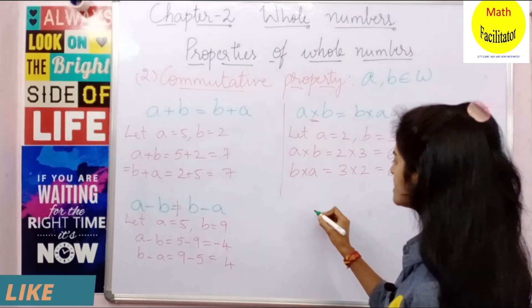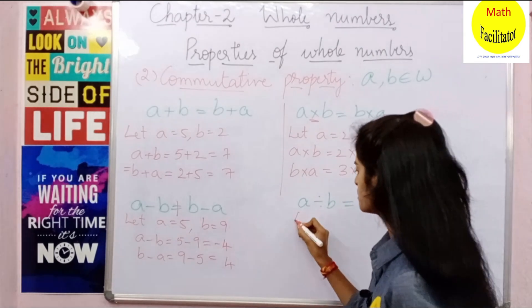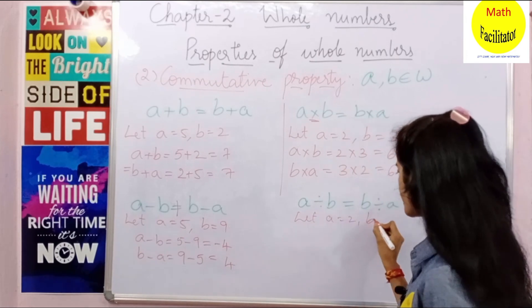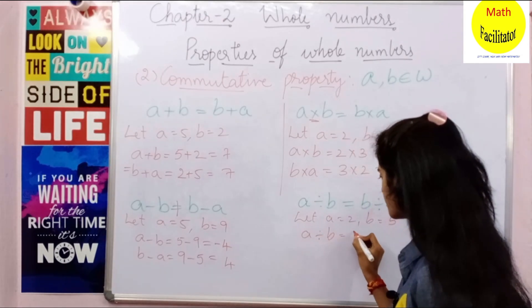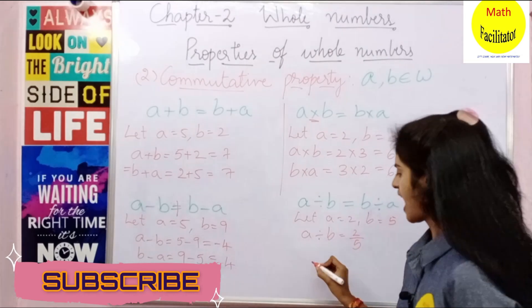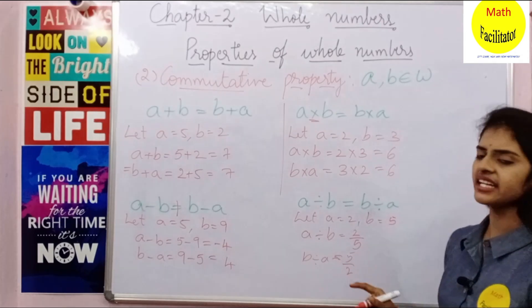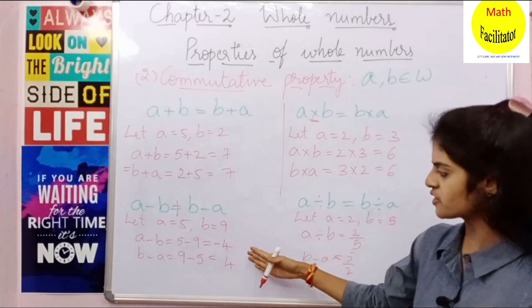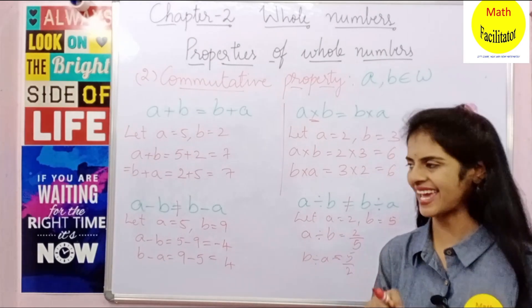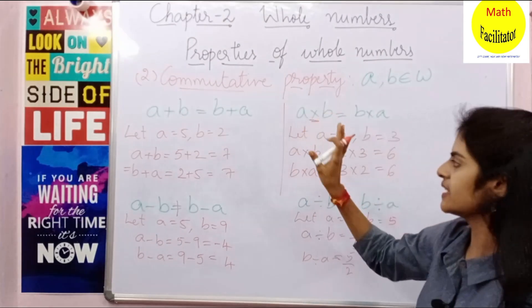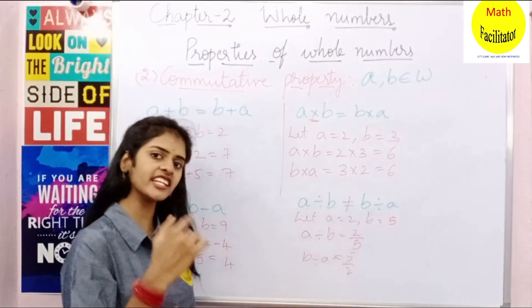If you want to check for division, A divided by B should equal B divided by A. Let A equal to 2 and B equal to 5. A divided by B is 2 divided by 5, and B divided by A is 5 divided by 2. You can see that 2 by 5 is not equal to 5 by 2. So only addition and multiplication satisfy commutative property. Whole numbers are commutative under addition and multiplication.